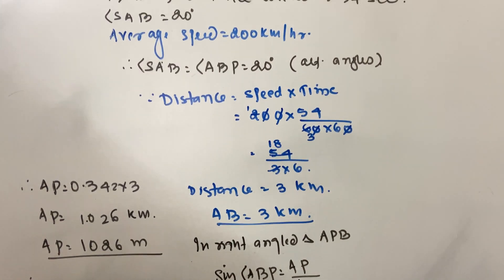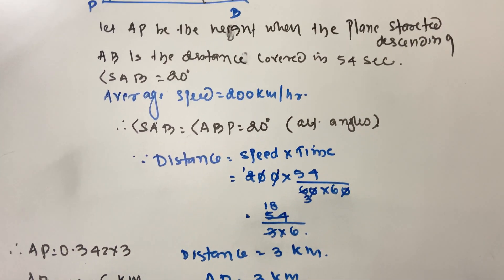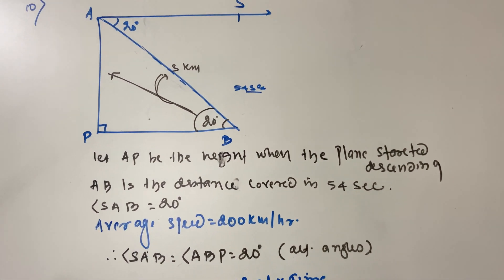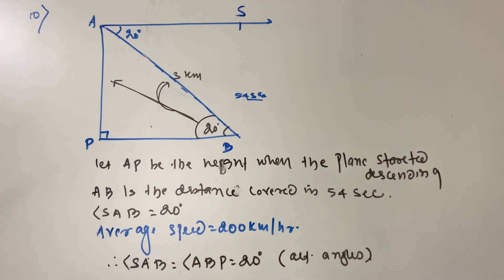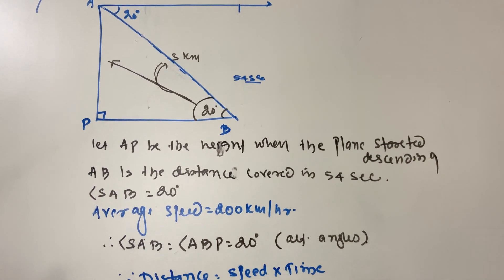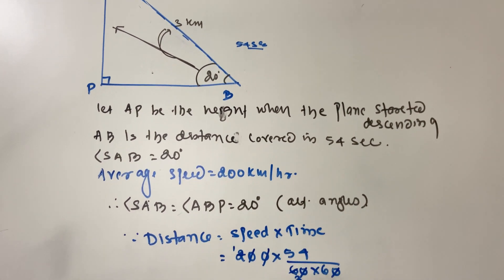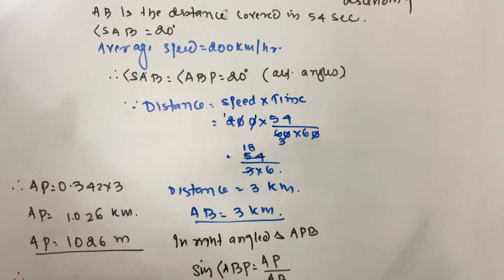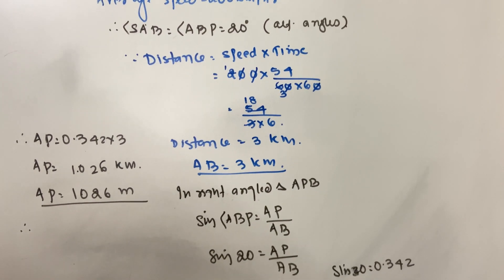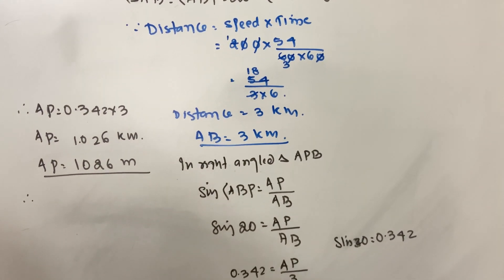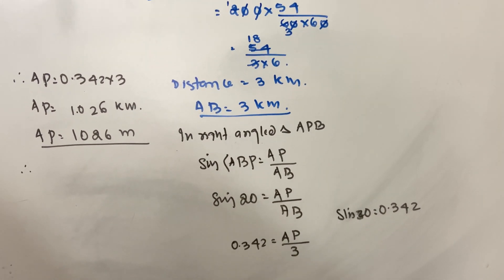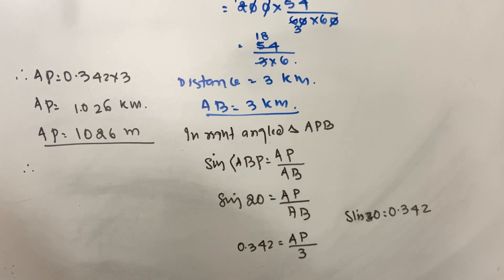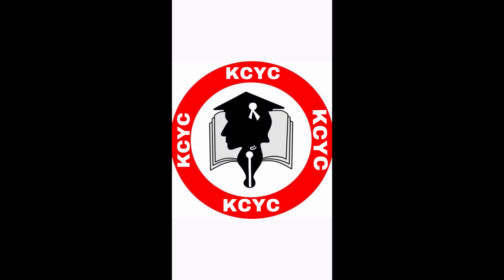Therefore the height of the plane when it started landing was 1026 meters. This is how you do sum number ten. With this video, we have finished chapter six in geometry, that is trigonometry. Meet you in the next video.